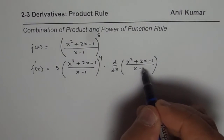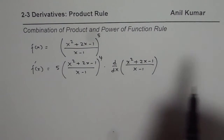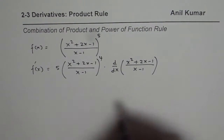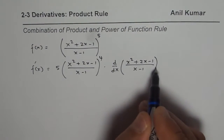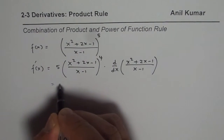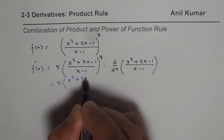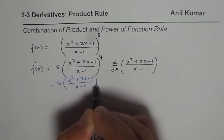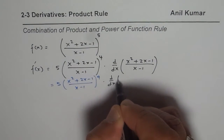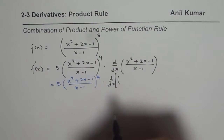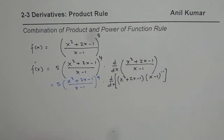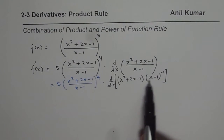We could consider this to be a product. So let me write it in blue ink. We will write d/dx of the inside function as a product of two functions: x squared plus 2x minus 1 times x minus 1 to the power of minus 1. Now I have a product and I can apply the product rule. That is what I wanted to explain.